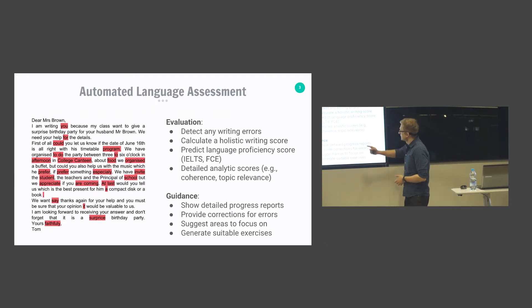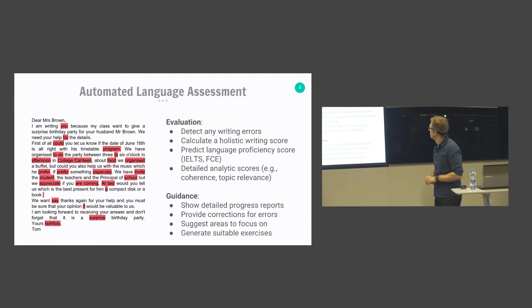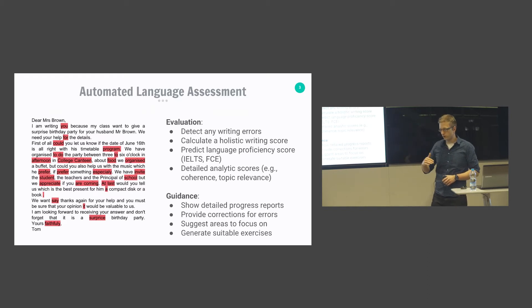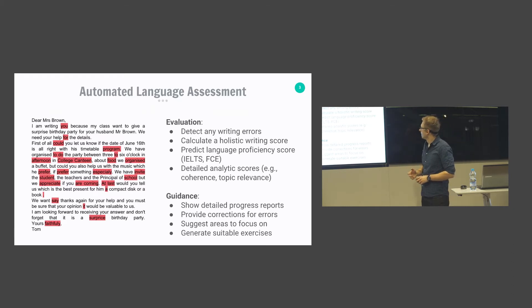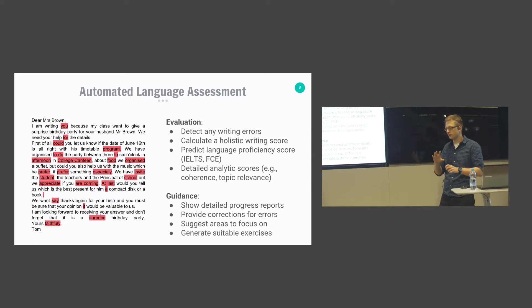Given a text, we would first perform an evaluation: detecting errors in the writing, calculating an overall score for writing quality, predicting a language proficiency score corresponding to levels in official language tests, and giving detailed analytic scores about different aspects of the writing — for example, whether the text is on topic, coherent, and cohesive.